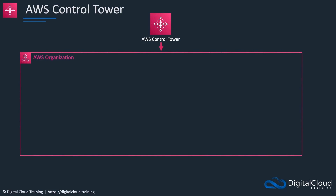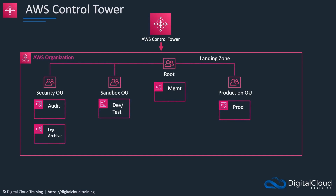With Control Tower we're able to leverage Organizations to create something called a landing zone. The landing zone is specific to Control Tower. With Organizations alone you can create a very similar topology, but you have to do it all yourself, whereas Control Tower will deploy it for you. It creates a set of accounts including a security, a sandbox, the root management account, and a production OU with a production account in it.